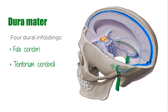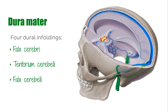The tentorium cerebelli, a tent-like structure that spreads between the petrous part of the temporal bone and the transverse sinus, separating the cerebellum from the occipital lobes. The falx cerebelli, another sickle-shaped dural projection situated in the posterior part of the posterior cranial fossa between the right and left hemispheres of the cerebellum.